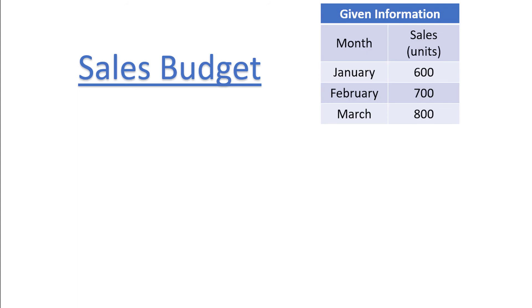Our master budget relates to a company called Ellison Enterprises and will be for the first three months of 2021. First we will complete the sales budget. The given information relevant to the sales budget is that budgeted sales are 600 units for January, 700 units for February, and 800 units for March, and that the selling price per unit is $55 each.